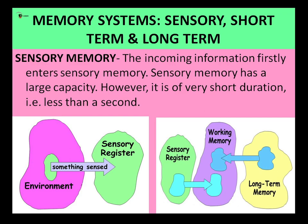Whatever is getting registered in the sensory memory is actually an exact replica — the exact copy of the stimulus itself. That is why we have probably experienced visual after-images. For instance, if you just look at a bulb, something so impactful on our eyes, and upon closing your eyes, many times we feel the flashes — the trail of the bulb's light still being there.